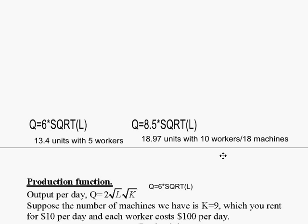We'd be doing better to open up two small operations, each with 5 workers and 9 machines, each with 13.4 units, rather than one big operation with 10 workers and 18 machines.